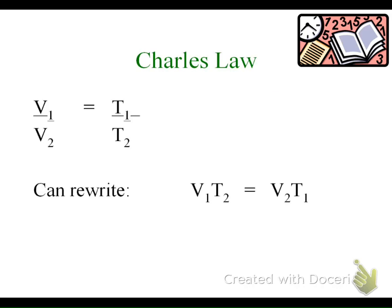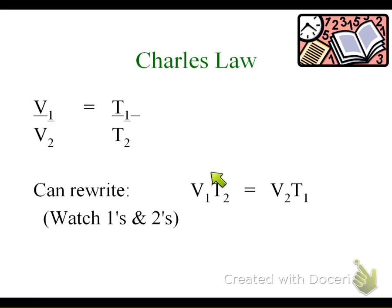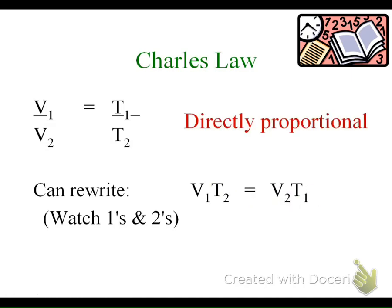The equation for Charles' Law is V1 over T1 equals V2 over T2. Please watch your ones and twos — a lot of people switch their T values. So it's V1 times T2 equals V2 times T1; be careful with that. This is a directly proportional law, so if you were to graph volume versus temperature, the graph would be a straight line. You need to know the difference between directly proportional and inversely proportional graphs.